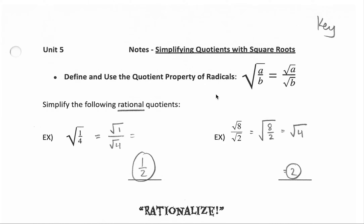There is what's called the quotient property of radicals, where if you have a fraction under a square root, you are allowed to give the numerator and denominator each their own square root. Sometimes that helps simplify things. For example, the square root of 1/4 is maybe not possible to do in our head as is, but if we break it apart and give the top its own square root and the bottom its own square root, we can simplify: the square root of 1 is 1, and the square root of 4 is 2.